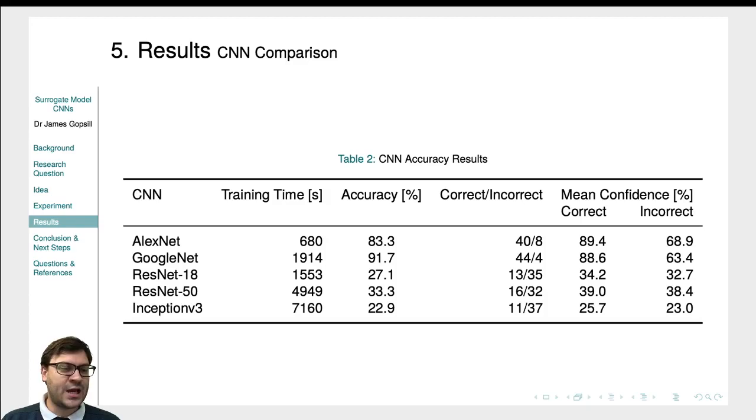So our results when we were comparing CNNs, we found that GoogleNet and AlexNet were the most accurate for our use case whereas ResNet and Inception did not perform as well. So it does highlight that we have to be careful of which CNNs we choose to apply and it's always worth evaluating a few against our use case.